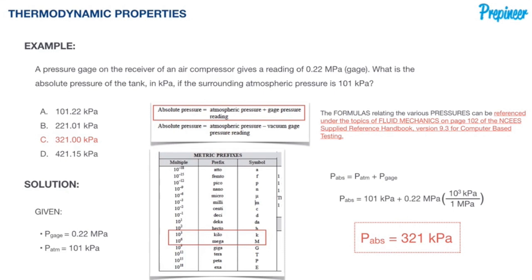Had we not converted the gauge reading to kPa, we might have quickly chosen option A of 101.22 kPa. It seems simple and right, but choosing it would be catastrophic.